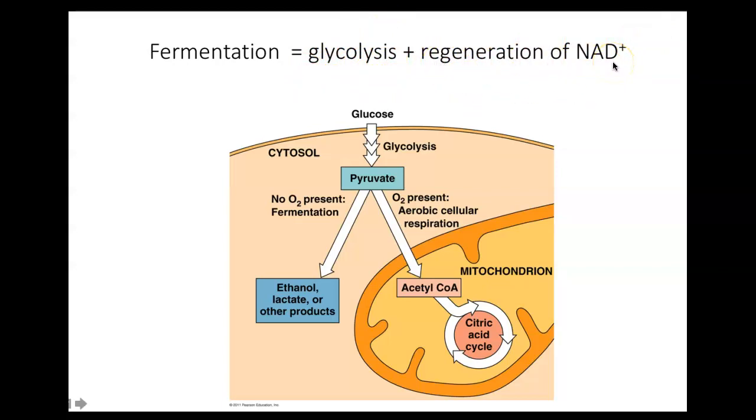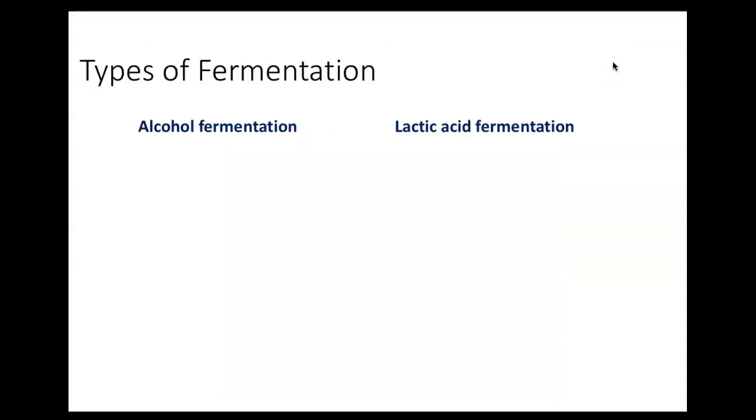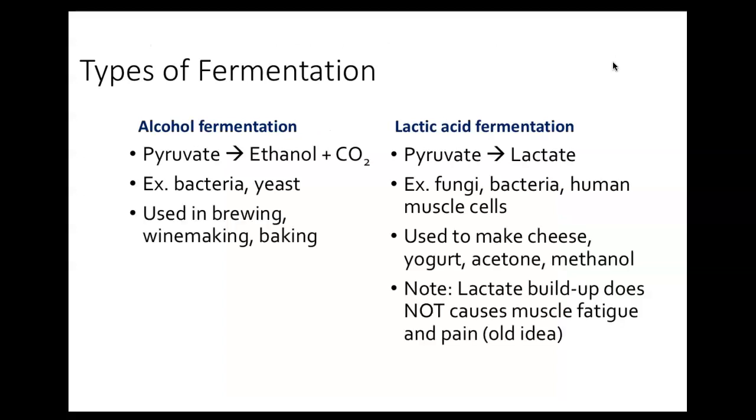So all fermentation is is glycolysis with the regeneration of NAD plus, and it's that regeneration of NAD plus that causes the byproduct of either lactic acid or ethanol to form. We have alcohol fermentation and lactic acid fermentation. Honestly, the only thing I would know is just that fermentation is a way for an organism to make ATP without oxygen. It's not very efficient, but at least for yeast it can keep them alive for a certain amount of time. For your muscle cells, it can keep them functioning for a certain amount of time, and that there's byproducts that get made—so ethanol or lactate. I wouldn't get too caught up in exactly how that's done. I would just know that this is a thing.